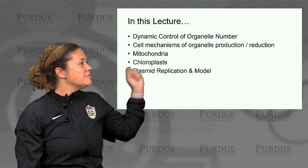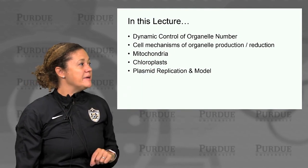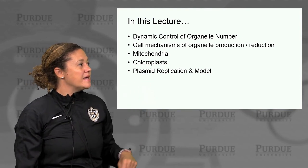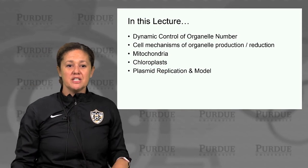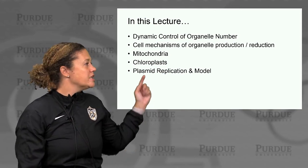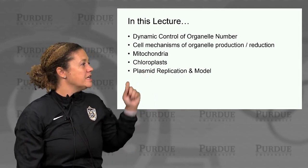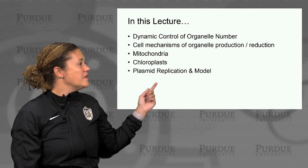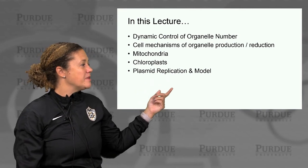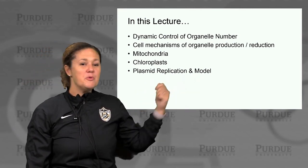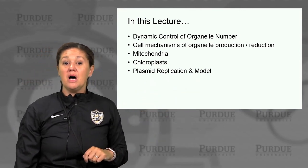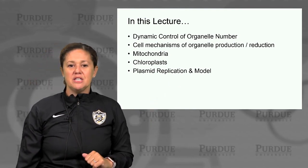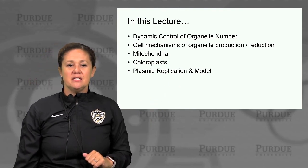We'll talk about dynamic control of organelle number, the cellular mechanisms of organelle production and reduction. We'll look at mitochondria and chloroplasts as example systems, as well as plasmid replication and a simple mathematical model looking at control of plasmid replication in bacteria.